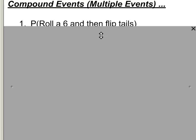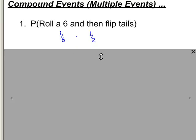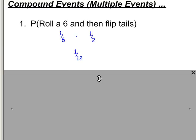Let's look at a couple more compound independent events. If I roll a die and then flip a coin, we know they're independent because they don't affect each other at all. If I want to roll a six, there's a one-in-six chance. If I want to flip tails, there's a one-in-two chance. I simply multiply these: one-sixth times one-half equals one-twelfth.